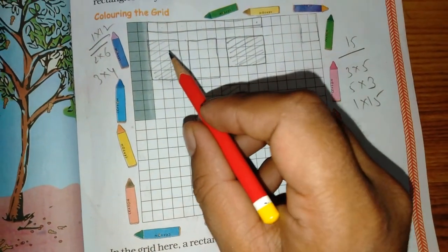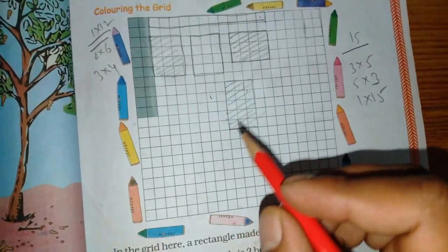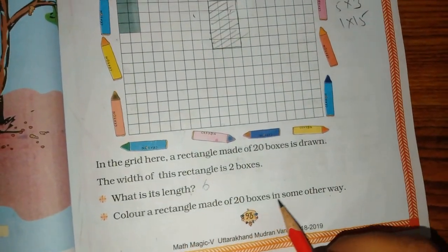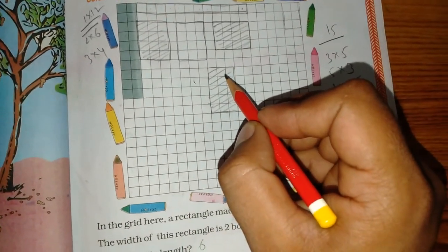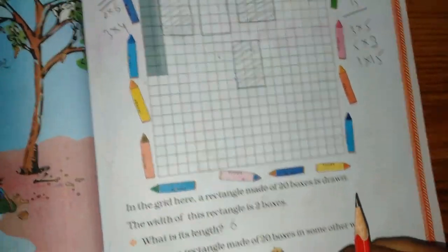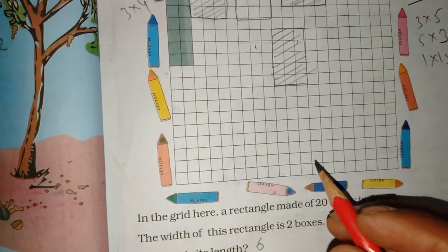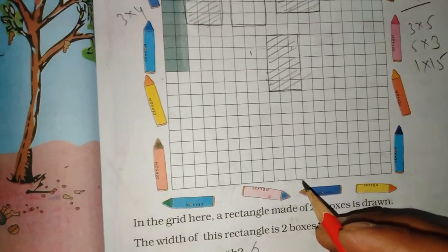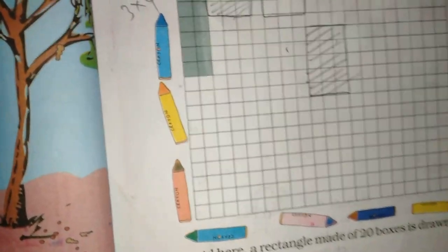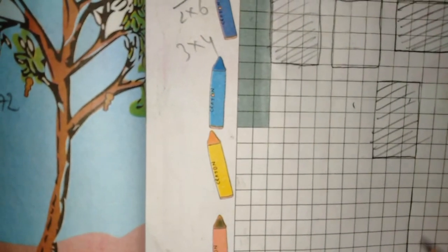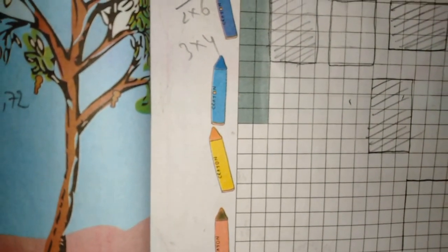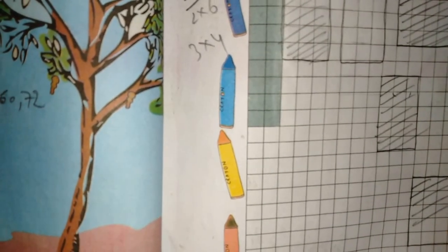How many are we? 1, 2, 3, 4, 5, 6, 7, 8, 9, 10. This is 20. Color a rectangle made of 20 boxes in some other way. How many are we? 20. 5 boxes. 10 by 2, 5 by 4, 2 by 10, 5 by 4. 3, 4, 5. How many are we? 20.